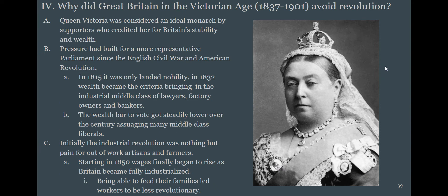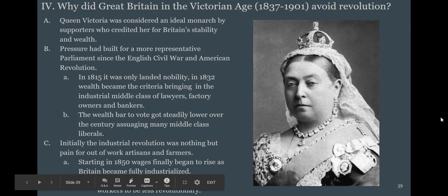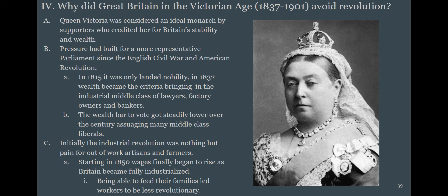Great Britain is a very different story — it avoids revolution and upheaval, with Queen Victoria considered an ideal monarch by many supporters. Revolutions largely happen legislatively: in 1832, industrial prosperity brings the middle classes into the franchise, meaning they can vote. Over the century the bar to vote gets lower and lower until you get universal manhood suffrage right around World War One.